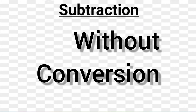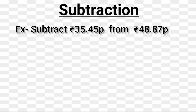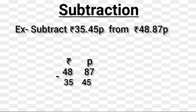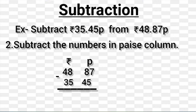Now let's subtract money without conversion. Another example: subtract 35 rupees 45 paise from 48 rupees 87 paise. To solve this, we go through the following steps. Step 1: Arrange the rupees and paise in column form. Step 2: Subtract the numbers in the paise column — 87 paise minus 45 paise equals 42 paise.